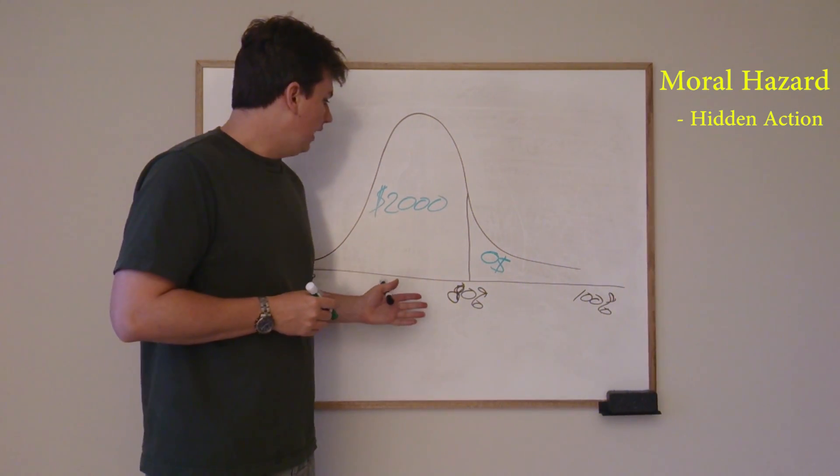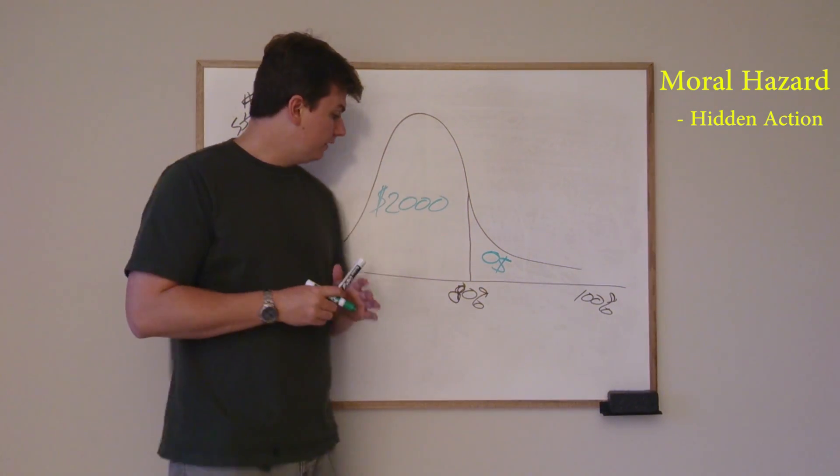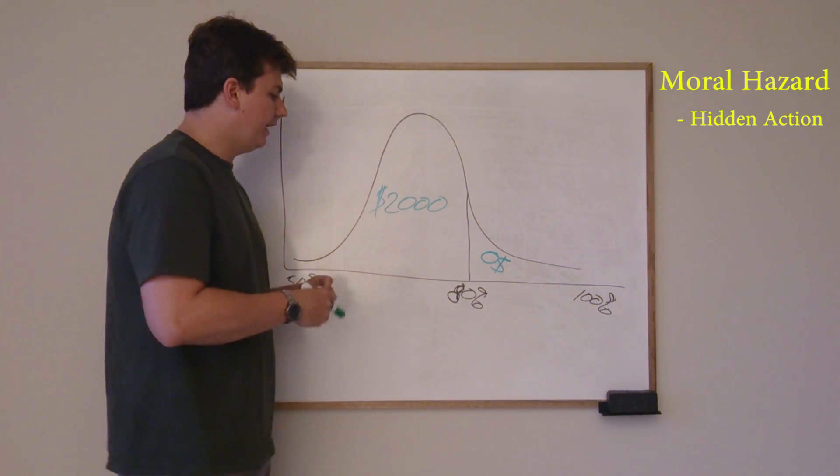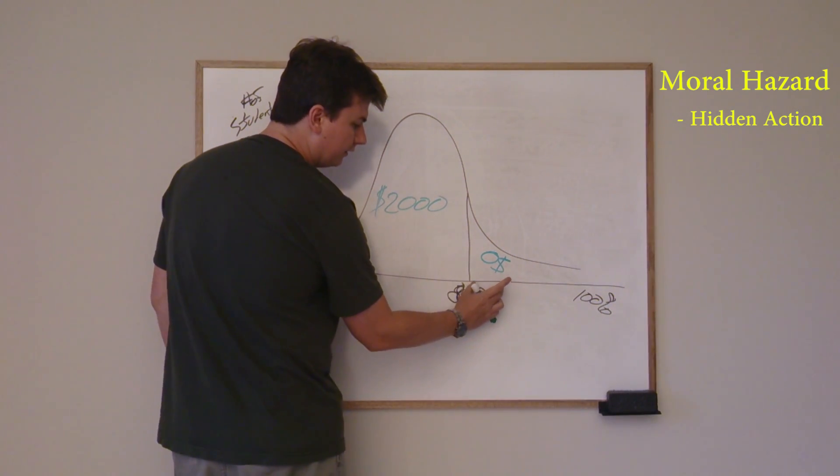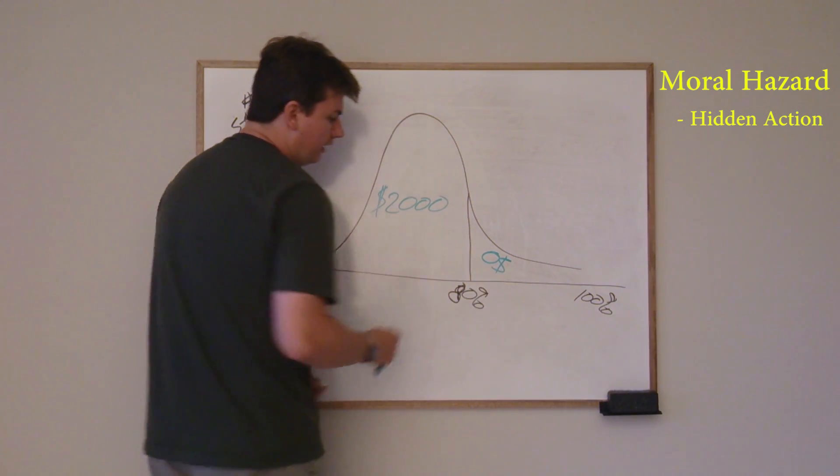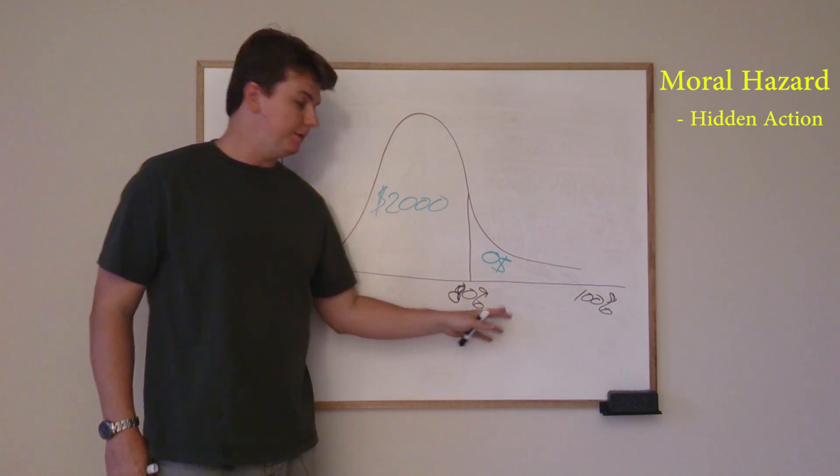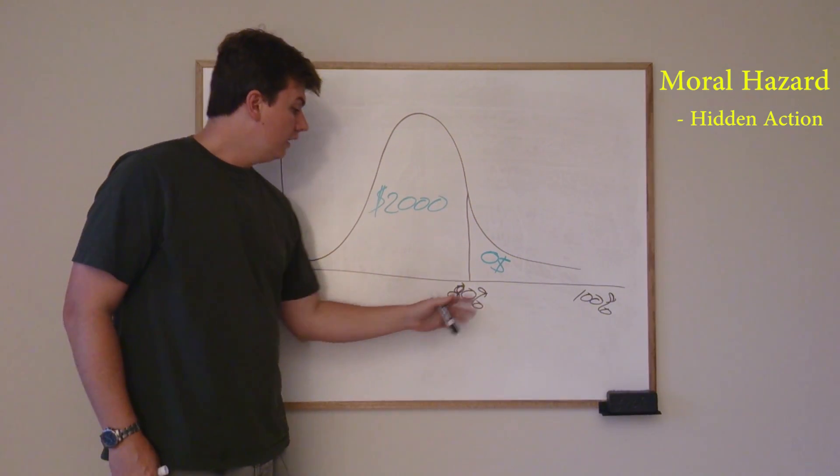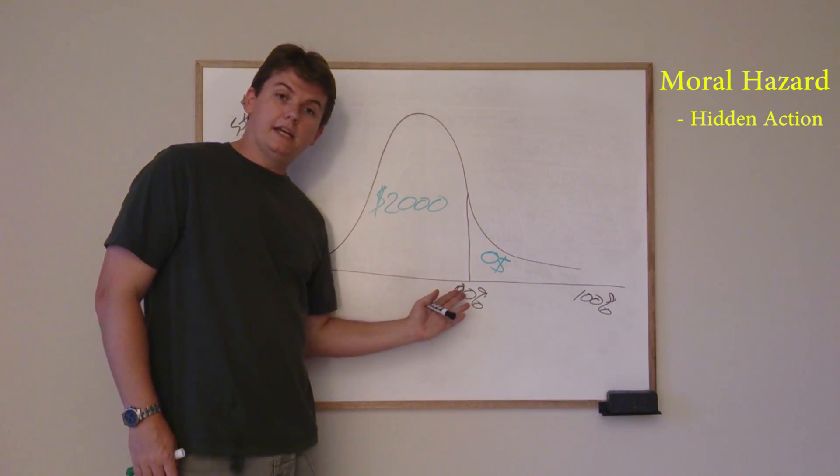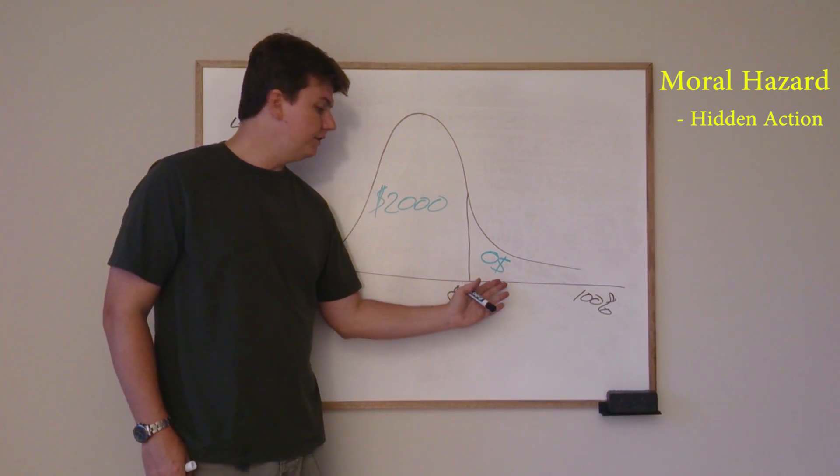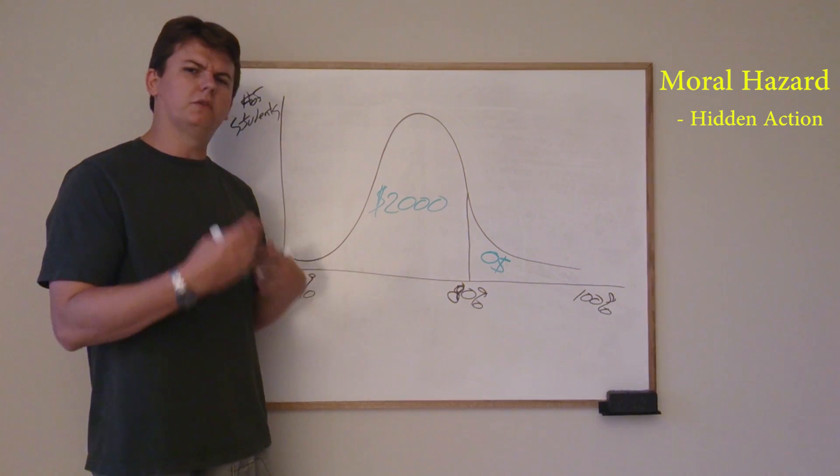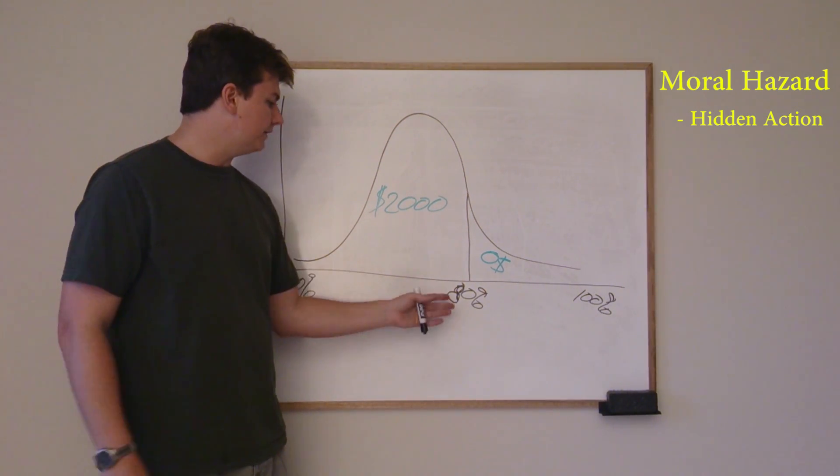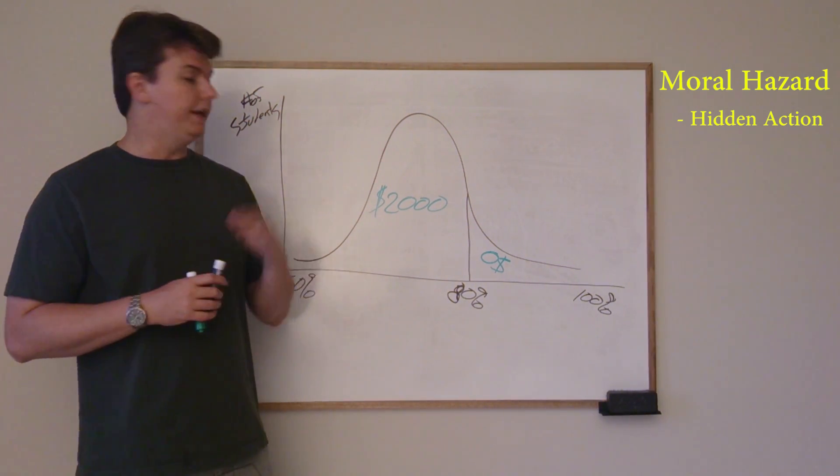So these students would study a certain amount, but you can see probably that anyone that's in this area that would have studied without the insurance here, I've probably affected their study habits if they have bought the insurance. All of a sudden the people that were getting, you know, 81 and 82, all of a sudden they start moving over here to get there and they sort of don't study as hard and I change their habits and they get their $2,000 payout.